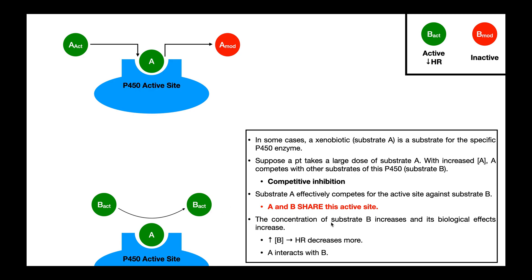When there's more of drug A, there's less metabolism of drug B because B can't get into the active site — A competes for it. The concentration of drug B increases, and its biological effects increase. So if drug B is given with drug A, there will be more drug B because less of it is metabolized, and the heart rate will decrease more. The patient might actually have a lower heart rate than expected. We can conclude that drug A interacts with drug B through competitive inhibition.